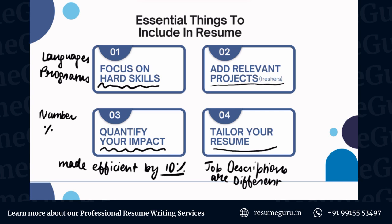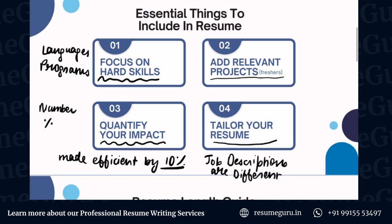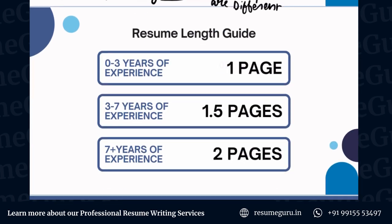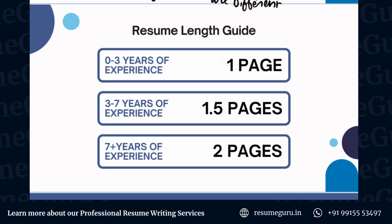Last but not least is tailoring your resume. Job descriptions for whichever roles you apply to are different every time. If you're using the same resume for every single job role without tailoring it for different descriptions, you may not get as good a result, because some companies require some skill sets while others might require something else. So it's very important that you're actually optimizing your resume for the target role you're looking for.